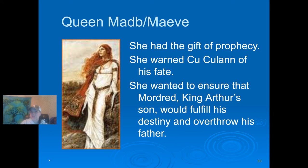Ector, Kay, and Bedivere. I'm going to first talk about Kay because he's the son of Sir Ector. Ector and Kay were involved in Merlin's upbringing. Sir Kay was the son of Ector and the foster brother of King Arthur. History records Kay as being a very tall man — in fact, he was known as the Tall. He appears in several stories; at times he is volatile and has a cruel nature, but he was known as Arthur's steward — his right-hand man — and was one of his most faithful companions. King Arthur could really trust Sir Kay.